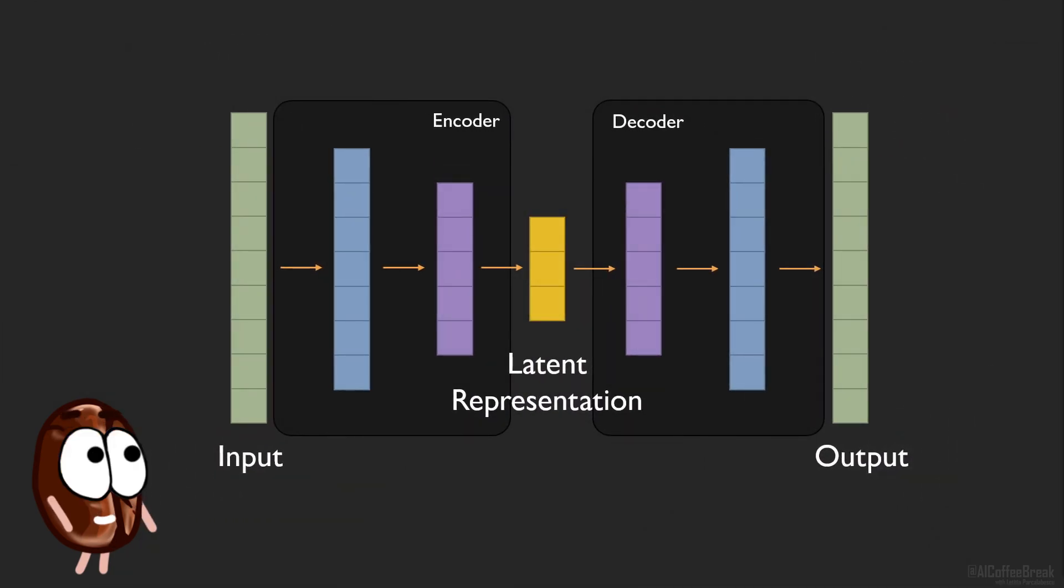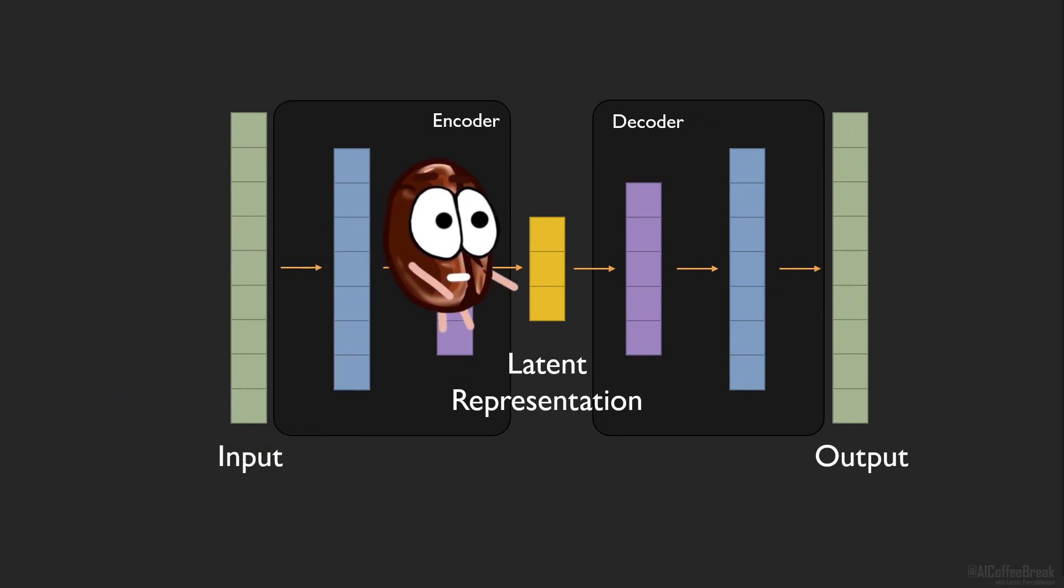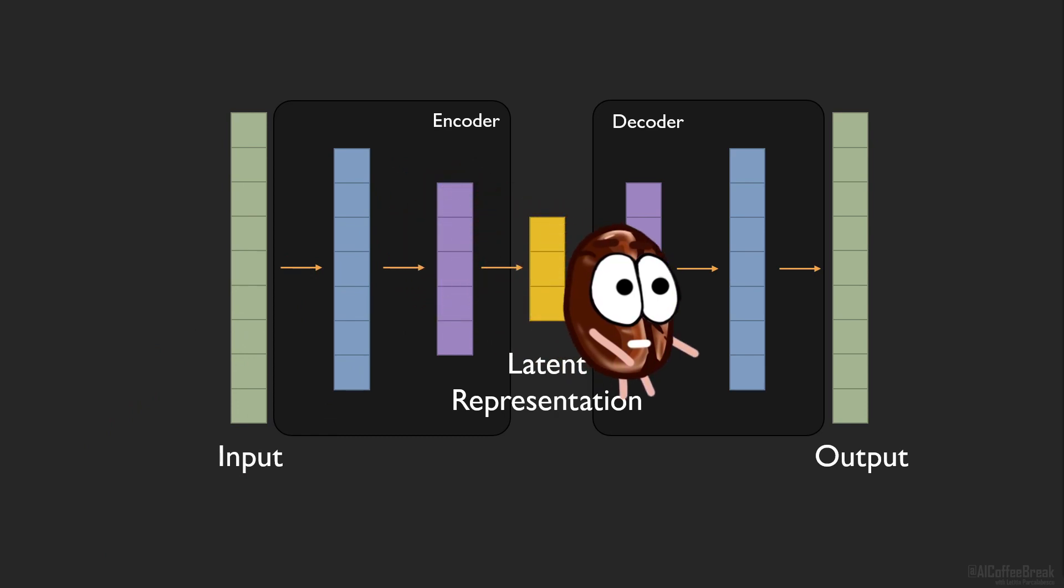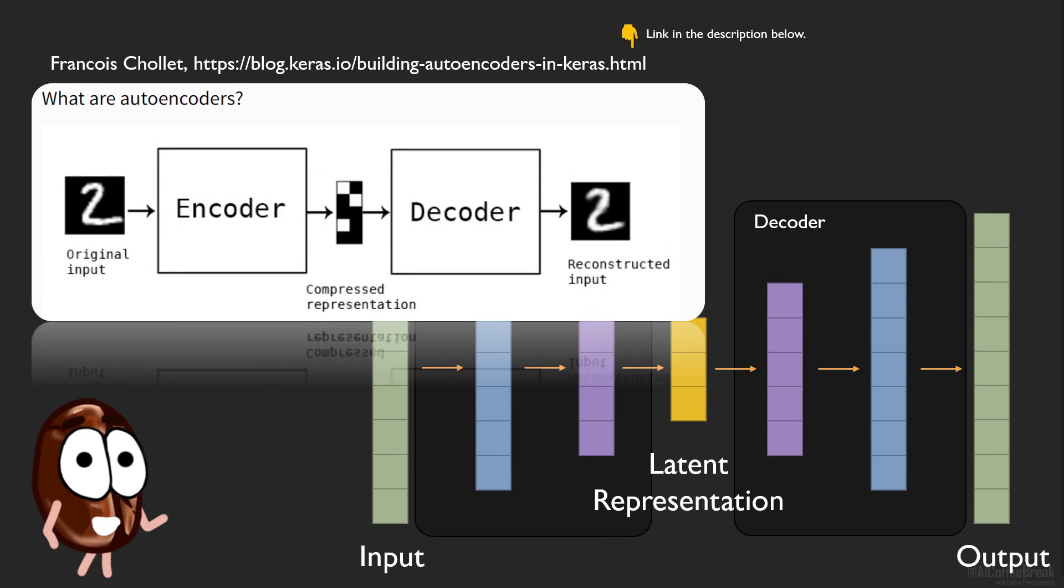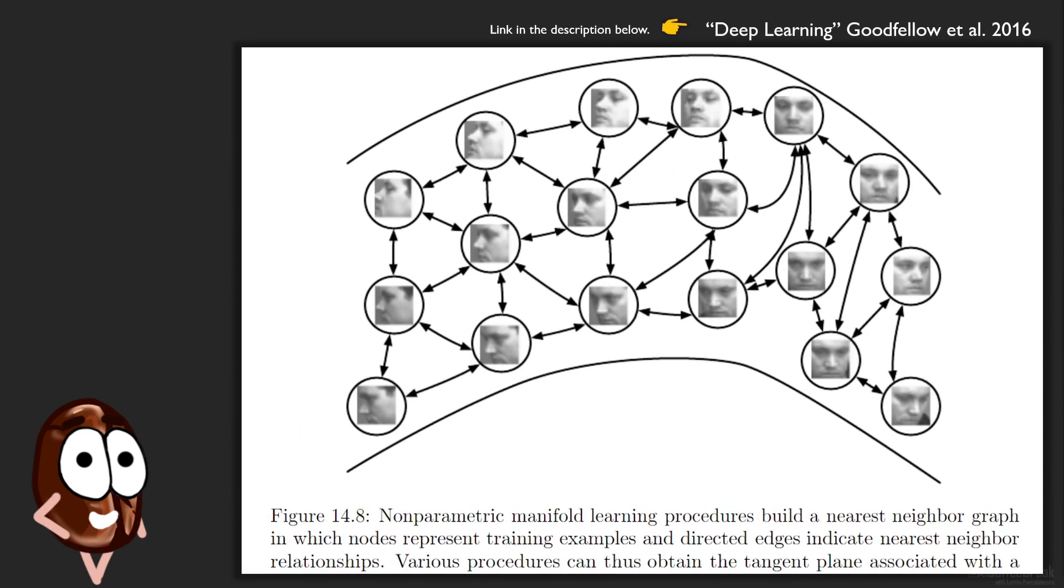Autoencoders back in the day were reconstructing the input while being constrained to encode the input into a lower dimensional space, then reconstruct the input again, enforced by an L2 loss, a simple distance metric between input and output. And because of the bottleneck in the middle reducing the dimensionality of the data, the hidden space is a compressed, meaningfully packed and efficiently packed version of the input.